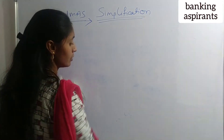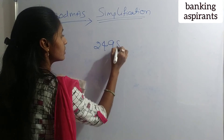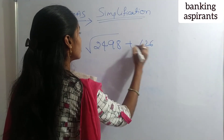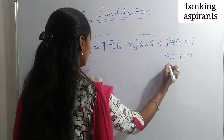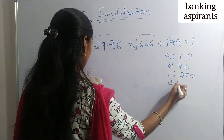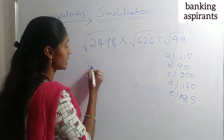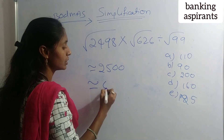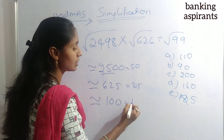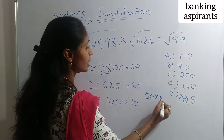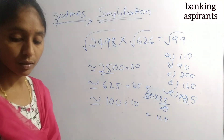Next we will see approximations — how to calculate an approximate value close to the exact answer. Example: square root of 2498 plus square root of 626 divided by 99 equals how much? Options: A) 110, B) 90, C) 200, D) 160, E) 125. Solution: 2498 is near 2500 (50²), 626 is near 625 (25), 99 is near 100. So 50 × 25 ÷ 10 equals 1250 ÷ 10 equals 125. Answer is E) 125.